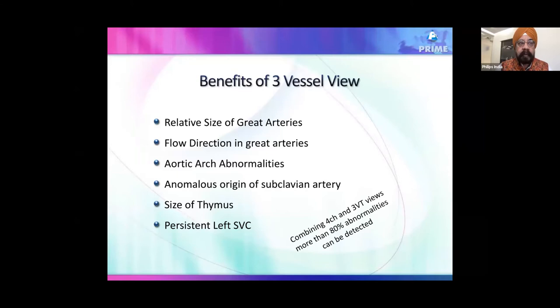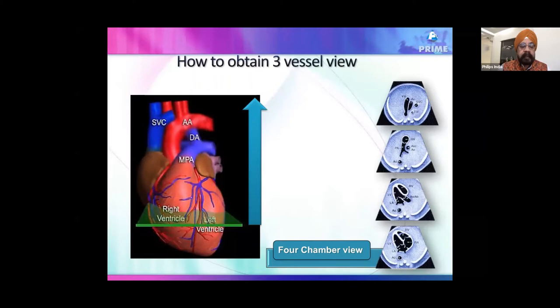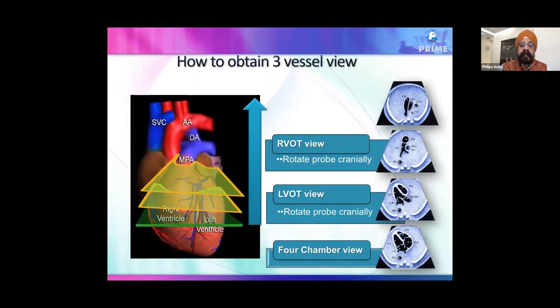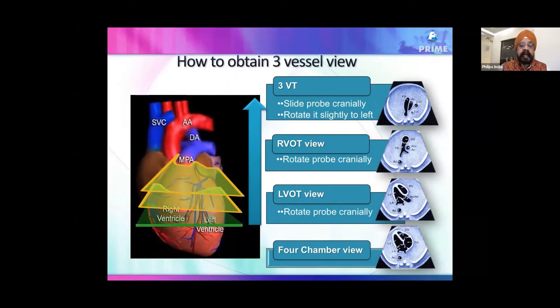To acquire the three-vessel view: start from the four-chamber view, slide the probe cranially to get an LVOT view, then further cranially to get an RVOT view, then slide more and rotate the probe slightly to the left to get the three-vessel trachea (3VT) view.